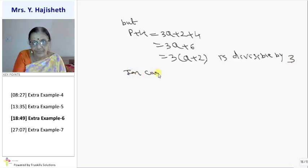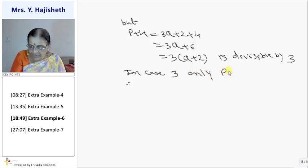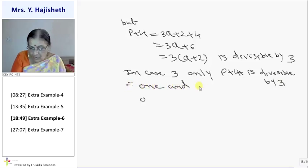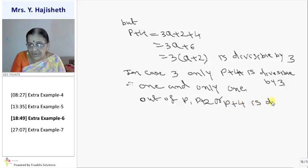So in case 3, only p plus 4 is divisible by 3. Therefore, therefore, 1 and only 1 out of p, p plus 2, or p plus 4 is divisible by 3.